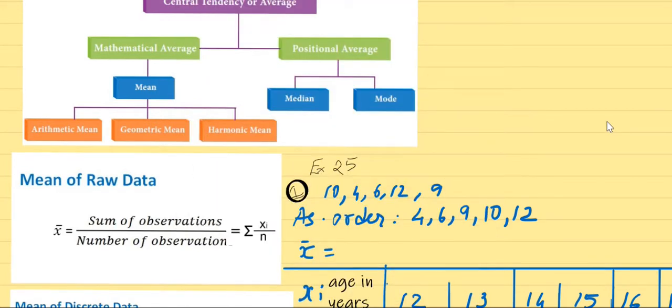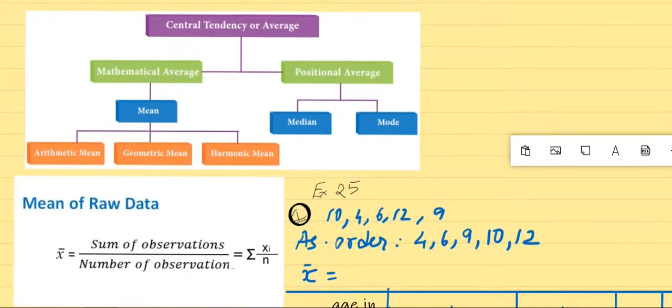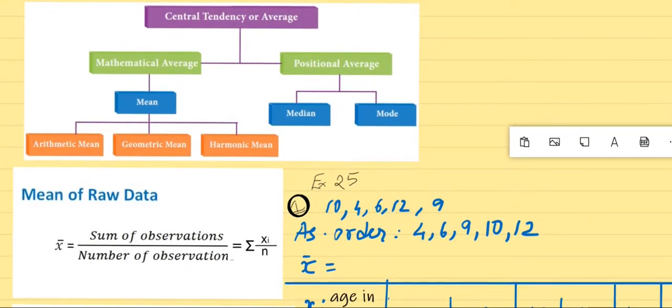Let us come to the whiteboard. Here you can see as the chapter name suggests, it's all about central tendencies. What do we mean by central tendencies? Central tendencies means those values which give us the central values of the data. If we have a data and we want to find the central value, the average, so that is an average or central tendency.